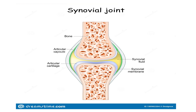The synovial joint has a synovial lining — the synovial membrane — that lines the cavity. Between the two ends of the bone you have a synovial cavity containing synovial fluid. At the ends of the bone you have caps of cartilage known as articular cartilage, which is hyaline cartilage but without a perichondrium, so it receives nutrition from the synovial fluid. Outside, you have the articular capsule.